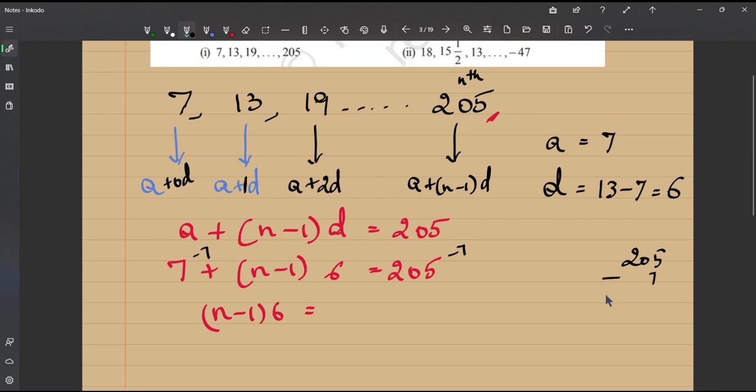205 minus 7, 15 minus 7 is 8, 9, 198. So this is 198. So your n minus 1 is equal to 198 by 6, 3 times 18, 1 carry over, 3 times 18. So this is 33.